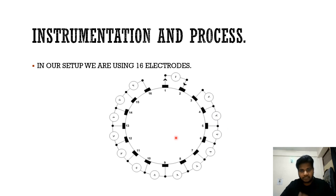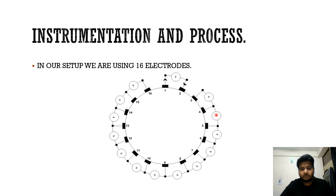For example, initially we pass the current through the first and second electrode and measure the voltages across all other pairs. Then we move to the next pair, such as the second and third electrodes, measure the voltage across all other pairs, and keep repeating this process for all possible electrode pairs.